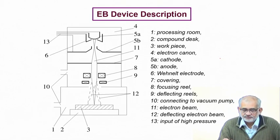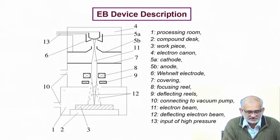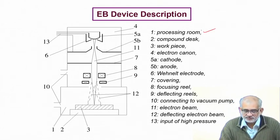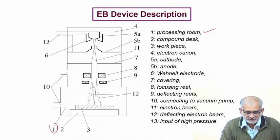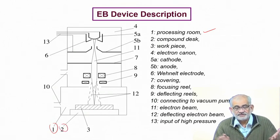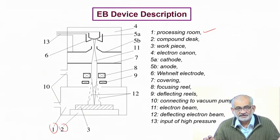The incident beam interacts with the solid matter, raises electrons to higher energy states, and allows them to return to the ground state, converting the energy into lattice heat. Heat flows vertically downwards and also laterally, depending on the diameter of the beam relative to the substrate thickness. This is the processing zone, and you also need a compound desk on which the substrate — whether small or large — is placed and clamped well so it does not deflect during processing.